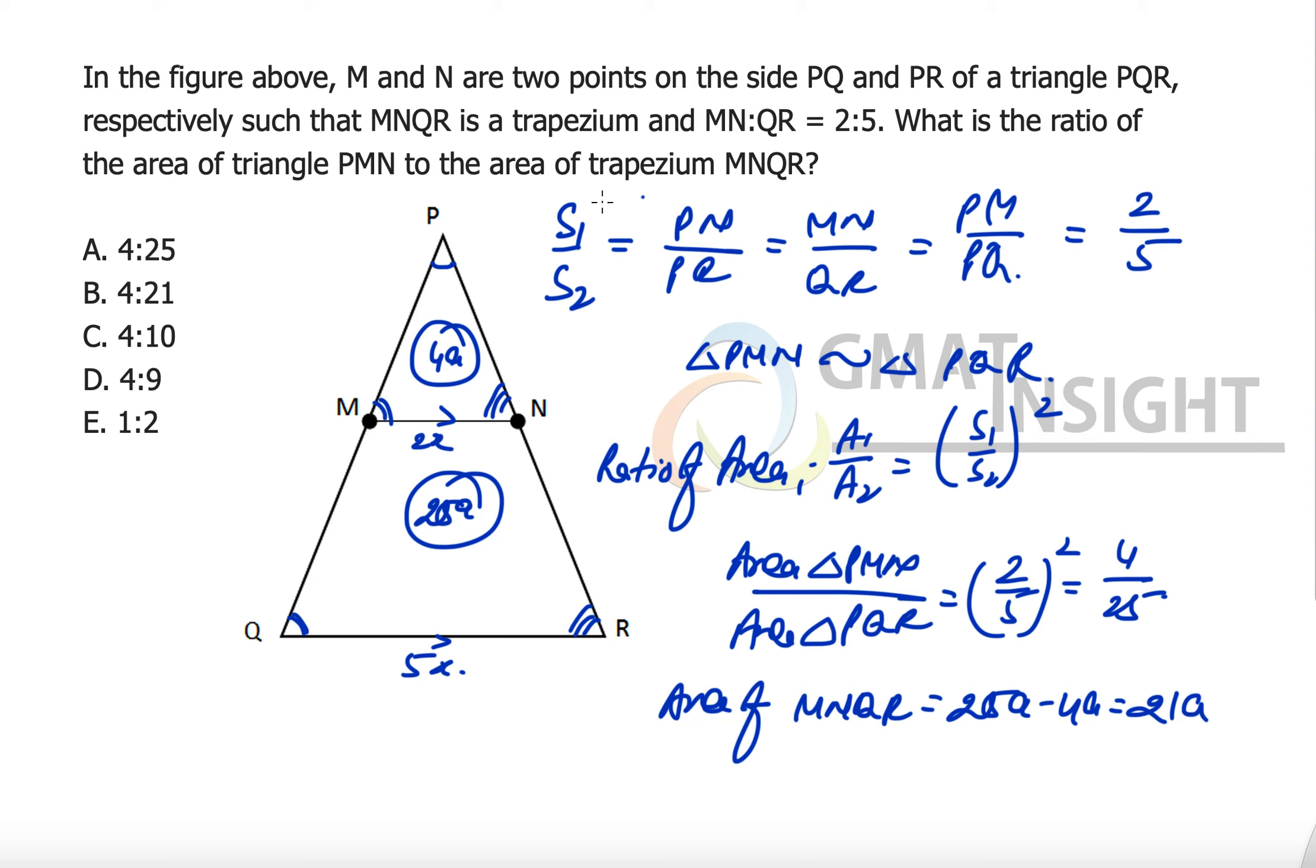Now what we have to find out is area of triangle PMN divided by area of trapezium MNQR so that will be equal to 4A divided by 21A so the answer should be 4 over 21 which is option B.